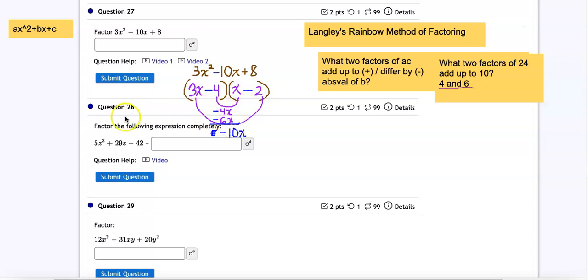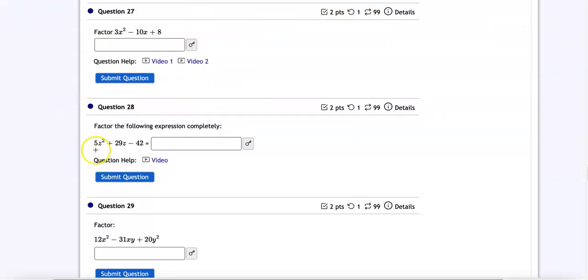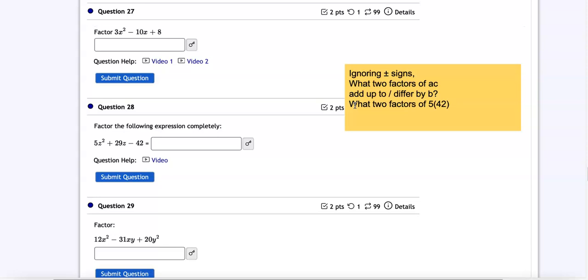Now let's repeat this whole process again with number 28, but we'll go through it a little faster. Hopefully the second time around will make more sense. So first we want to make the observation that we have a 5, a 29, and a negative 42. In my method, I ignore signs until the very end. So ignoring all the plus and minus signs, except to determine this part of the question, what two factors of AC differ by B? And again, I'm choosing differ by because the sign right here is a negative. So when this sign right here is negative, we use differ by. When this sign right here is positive, we use add up to. In this particular question, then we can reframe as what two factors of 5 times 42 differ by 29? So that would be what two factors of 210 differ by 29?